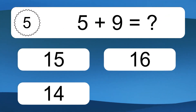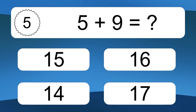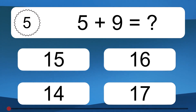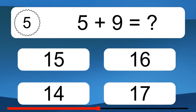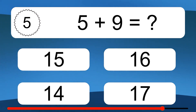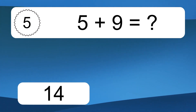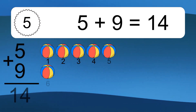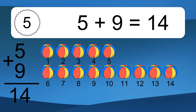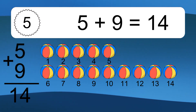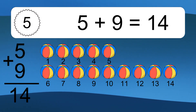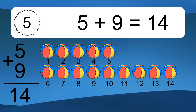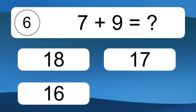5 plus 9 equals what? 5 plus 9 equals 14. Let's count it: 1, 2, 3, 4, 5, 6, 7, 8, 9, 10, 11, 12, 13, 14.